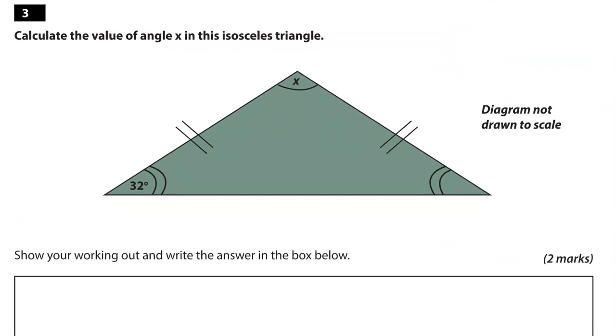Calculate the value of angle X in this isosceles triangle. Show your working out and write the answer in the box below. Isosceles triangles have two equal sides and also as a result two equal angles. So you can see these two lines in here. That means that this side is the same length as this side. Now the sides we don't need in this particular case because we're looking at the angle. So as you can see, these marks in here, the markings, tell you that these two angles are the same. So we know this angle is 32 degrees, so this one is 32 degrees as well.